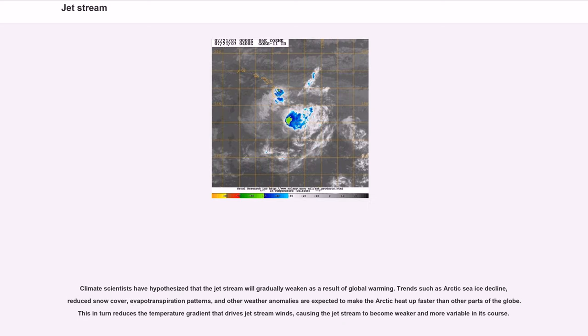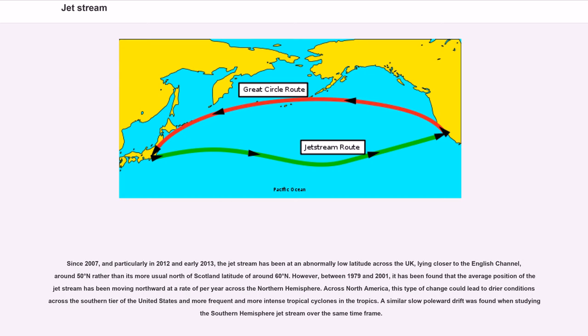Climate scientists have hypothesized that the jet stream will gradually weaken as a result of global warming. Trends such as Arctic sea ice decline, reduced snow cover, evapotranspiration patterns, and other weather anomalies are expected to make the Arctic heat up faster than other parts of the globe. This in turn reduces the temperature gradient that drives jet stream winds, causing the jet stream to become weaker and more variable in its course. Since 2007, and particularly in 2012 and early 2013, the jet stream has been at an abnormally low latitude across the UK, lying closer to the English Channel, around 50 degrees north rather than its more usual north of Scotland latitude of around 60 degrees north.